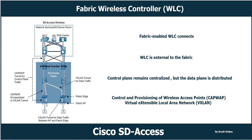Fabric APs establish a VXLAN tunnel to the fabric edge to transport wireless client data traffic through the VXLAN tunnel instead of the CAPWAP tunnel. For this to work, the AP must be directly connected to the fabric edge or a fabric extended node. Using a VXLAN tunnel to transport wireless data traffic increases performance and scalability because the wireless client data traffic doesn't need to be tunneled to the wireless LAN controller via CAPWAP, as the routing decision is taken directly by the fabric edge.